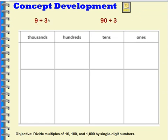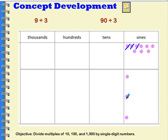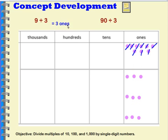We're going to begin with the ones. We're going to divide nine ones into three groups using our place value chart. I'm going to show nine ones, and then divide them up into three groups at the bottom, crossing out three at a time and putting them into groups in rows. So nine ones divided into three groups equals three ones — three ones in each group.